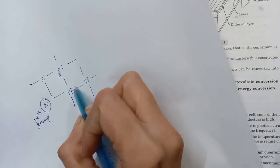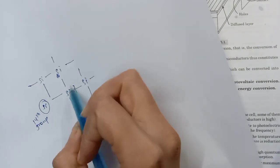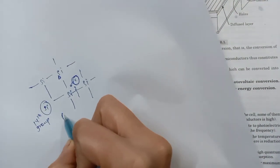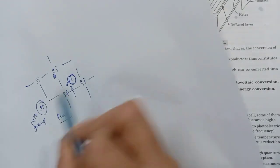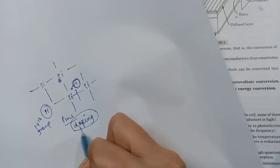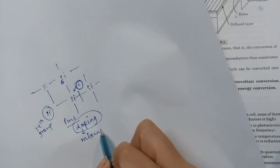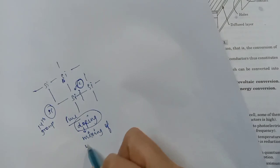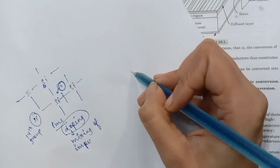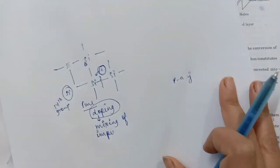But if we do something such that the bonds break and electrons are free, then they can move. So if we want free electrons — if we want electrons to move — we take a pure silicon crystal and do doping. Doping means mixing of impurities in the crystal. This is actually where the PN junction term comes in.